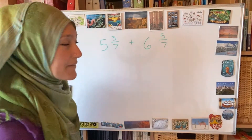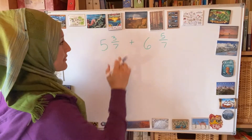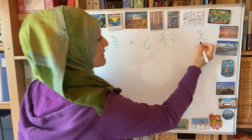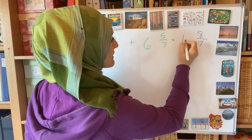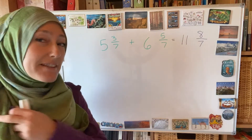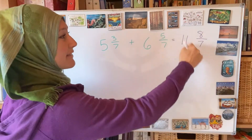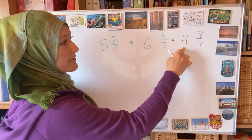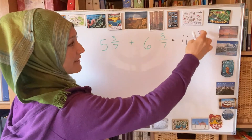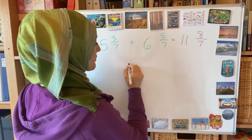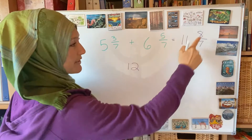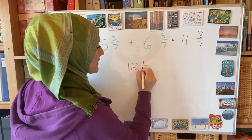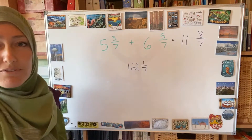5 and 3 sevenths plus 6 and 5 sevenths — we're adding. Start with the fraction first: 3 and 5 is 8, the 7 stays, and 6 and 5 is 11. Always check your answer at the end — can you do anything to it? Yes, that is not proper. I need to give that whole that's hiding in there to the whole over here. There's a 7 sevenths in here, so this becomes 12. And if I do 8 over 7 minus that 7 sevenths, what's left is 1 seventh. So your answer is 12 and 1 seventh.